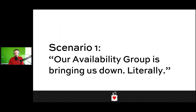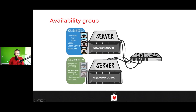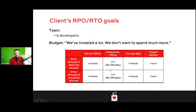Scenario number one: our Always On availability group is bringing us down. This particular client has something very simple — a two-node Always On availability group. One physical box with SQL Server installed is the primary for user databases, and then a second SQL Server, both using local storage with no SAN. It's a simple setup because this is a fairly small company, just five developers. They chose SQL Server as a backend and spent a lot of money buying Enterprise Edition for their Always On availability group.